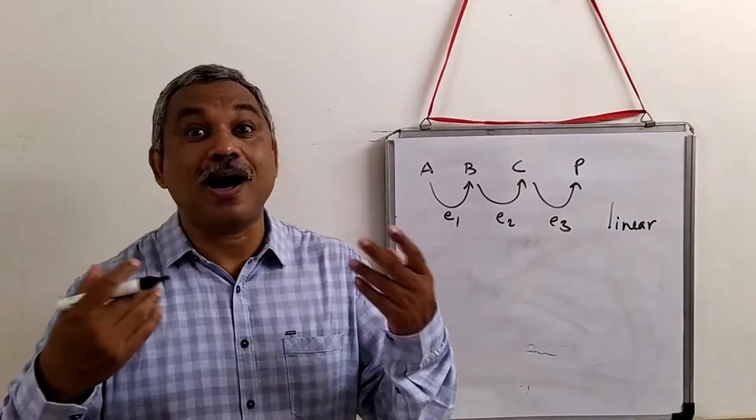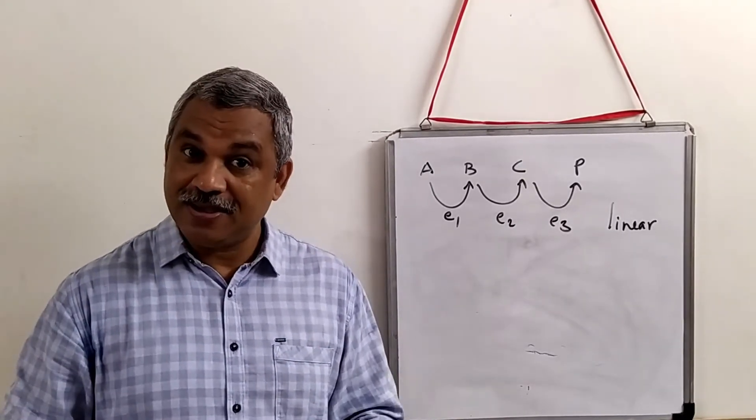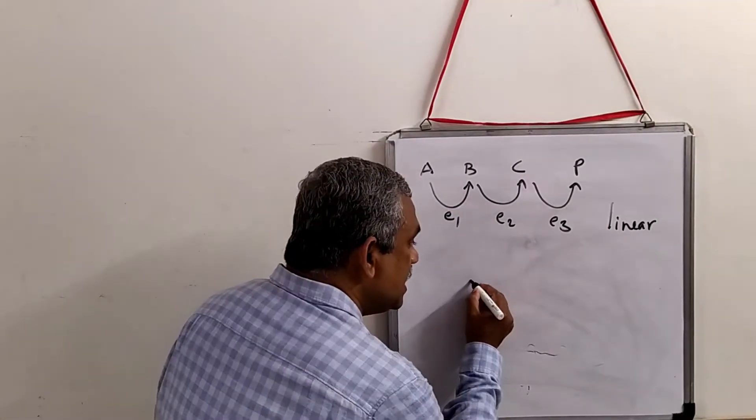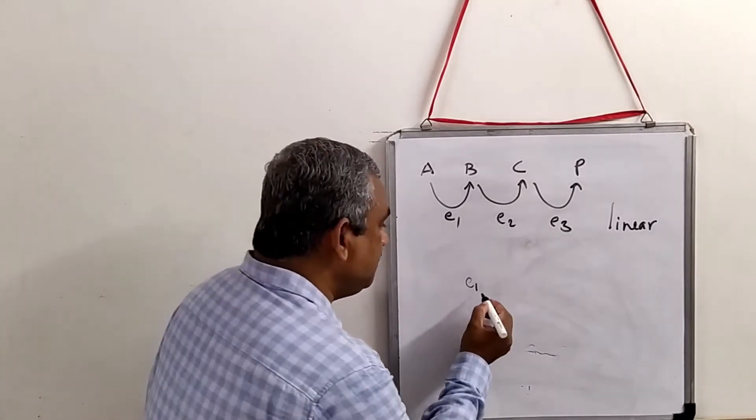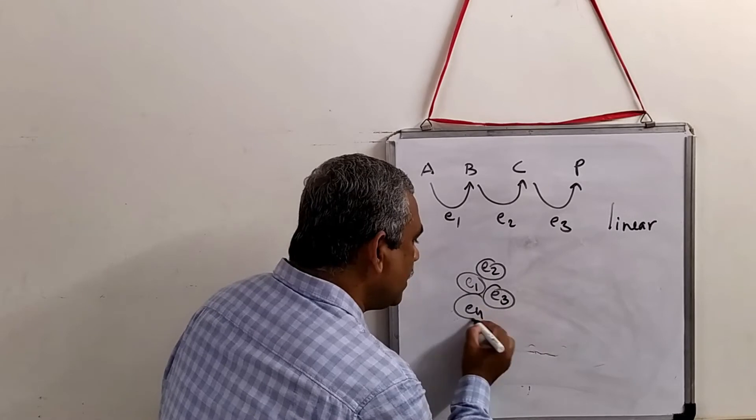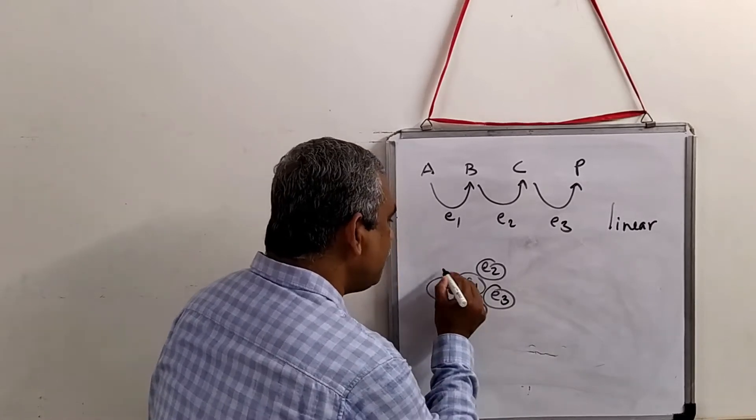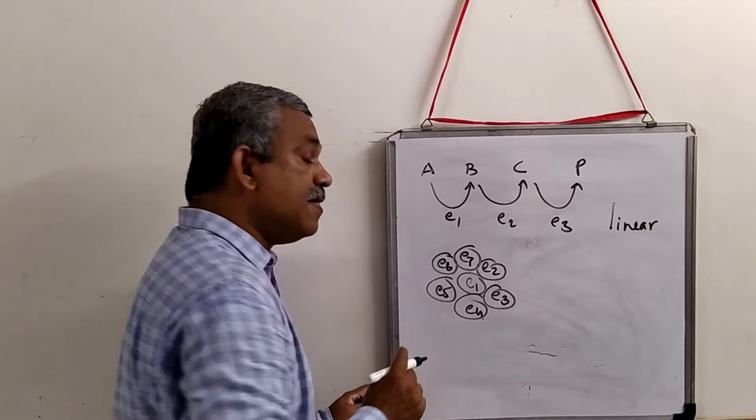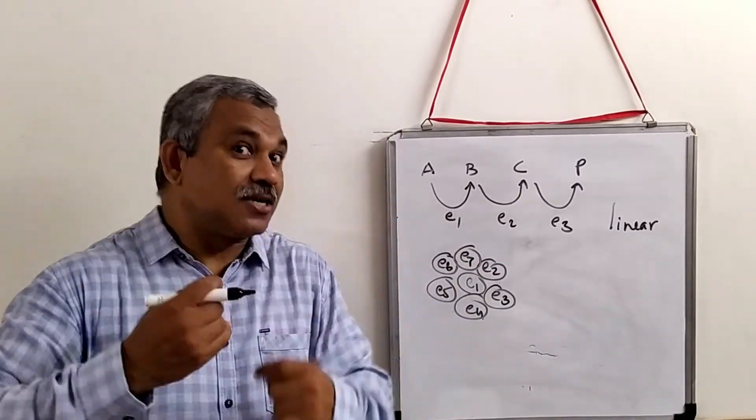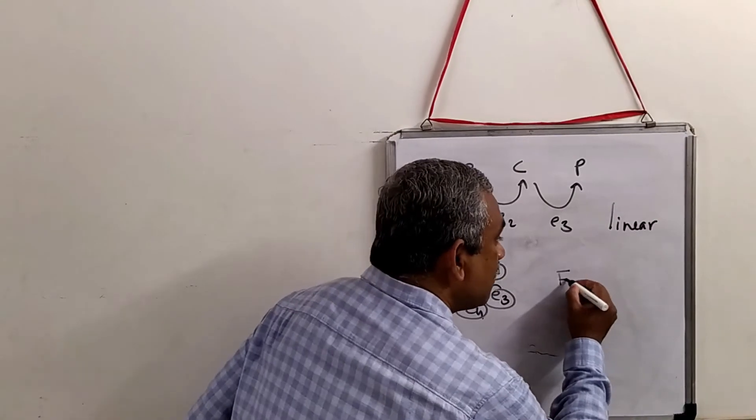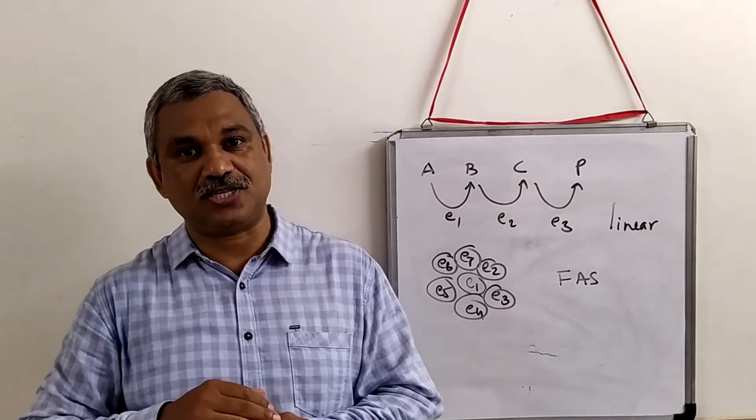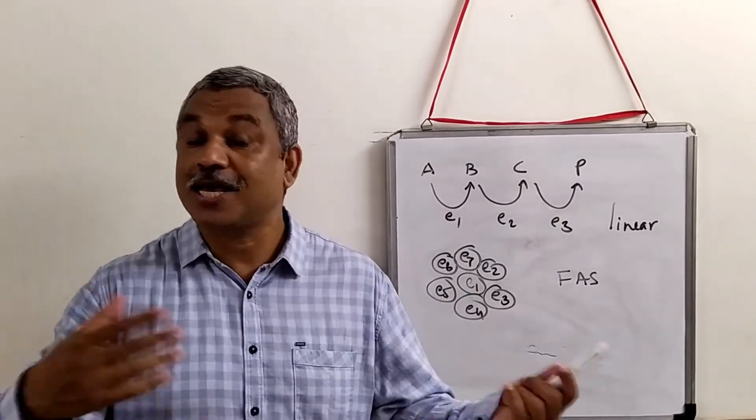In the second way to arrange enzymes, they are arranged into a kind of a complex. Enzyme E1 is here, then you have E2, E3, E4, E5, E6, E7 - they are arranged into a cluster. Such clusters you will find in fatty acid synthase complex, a classic example, and PDH complex.